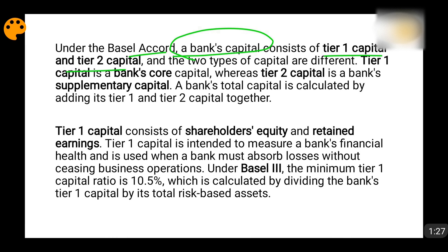If you are going to assess the capital of a bank, capital of a bank means the combined value of all the assets of the bank. These assets are not only in the form of cash — they are in the form of cash, equities, bonds, dividends, and everything. A whole lot of things comprise a bank's capital, and that capital can be divided into tier 1 capital and tier 2 capital.